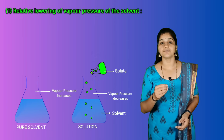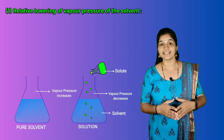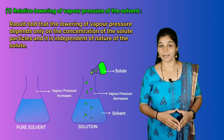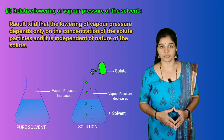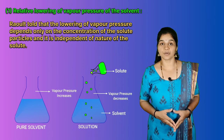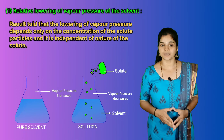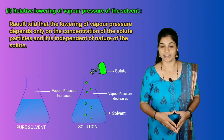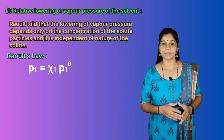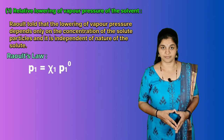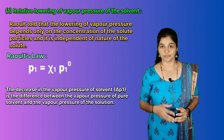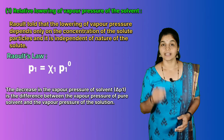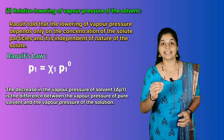We have studied that the vapor pressure of a solvent in solution is less than that of pure solvent. Raoult stated that the lowering of vapor pressure depends only on the concentration of the solute particles and is independent of the nature of the solute. The relation between vapor pressure of the solution, mole fraction, and vapor pressure of the solvent is given by Raoult's law: p1 = χ1 × p1⁰. The decrease in vapor pressure of the solvent is the difference between vapor pressure of the pure solvent and the vapor pressure of the solution, denoted by ΔP1.